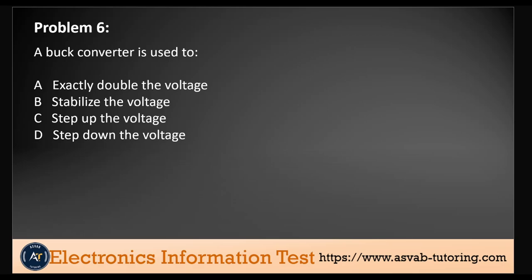A buck converter is used to... here are all the options. The correct answer is D: we step down the voltage. I mistook it for step up because we actually step up the current. So while we step up the current, the buck converter — which is a step down converter — is a DC to DC power converter that keeps the voltage down whilst stepping up the current from its input supply to its output load.